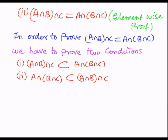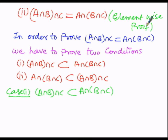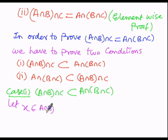In Case 1, we are going to prove A intersection B intersection C is a subset of A intersection of B intersection C. Since we are proving this by means of element-wise proof, suppose one element x which belongs to the LHS, that is A intersection B intersection C. That implies: